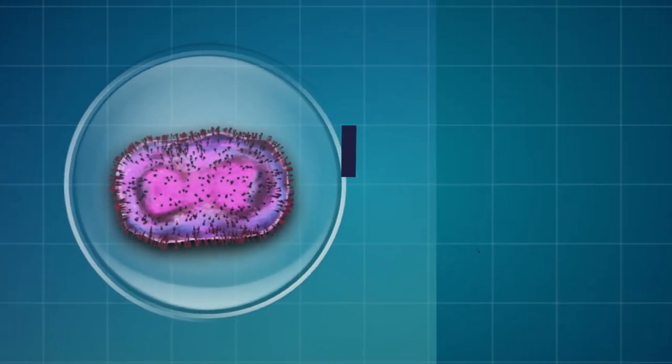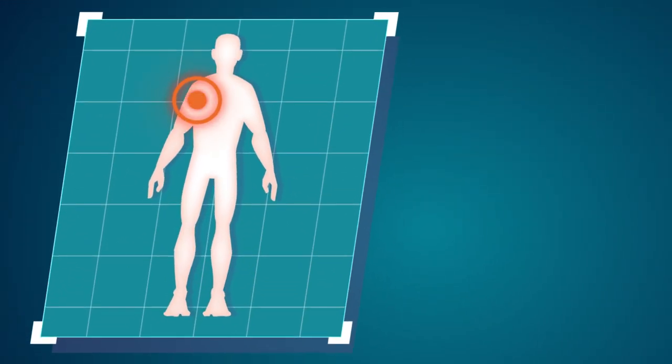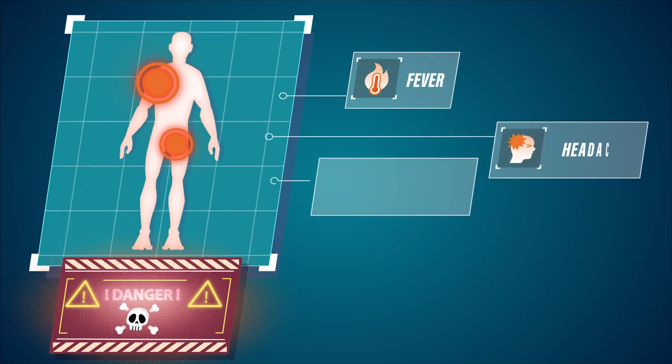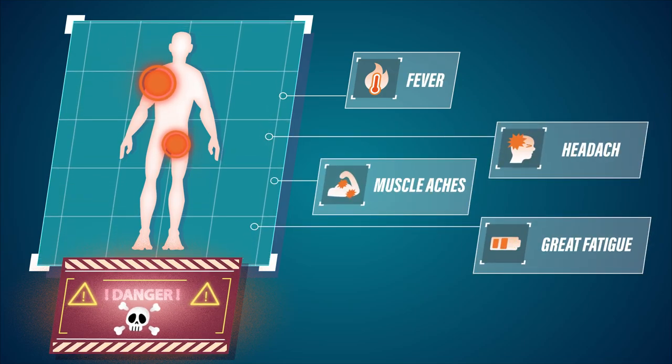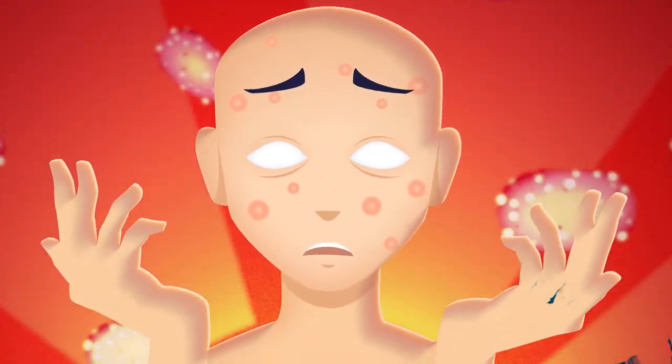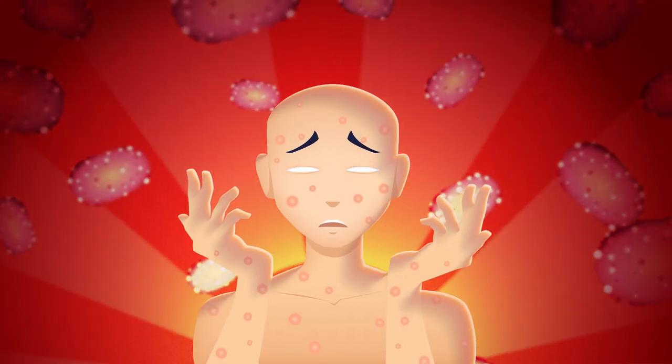Symptoms of MPOX usually appear between 5 and 21 days after exposure to the virus. The initial signs often resemble those of many other viral illnesses – fever, headaches, muscle aches, and extreme fatigue. A few days after the fever starts, a distinctive rash develops, often beginning on the face and then spreading to other parts of the body.